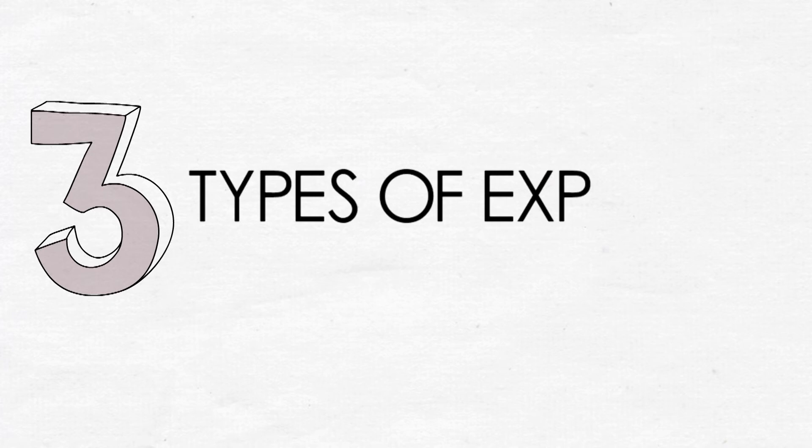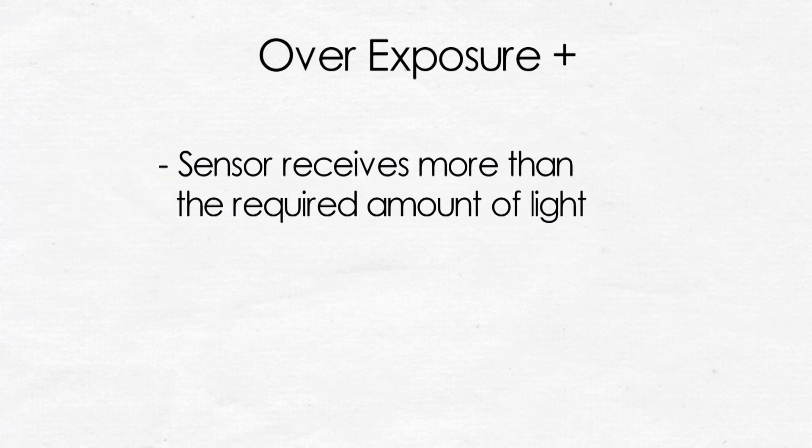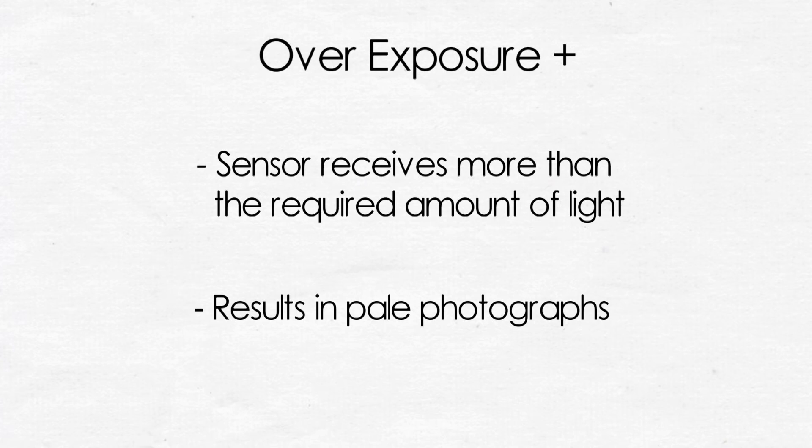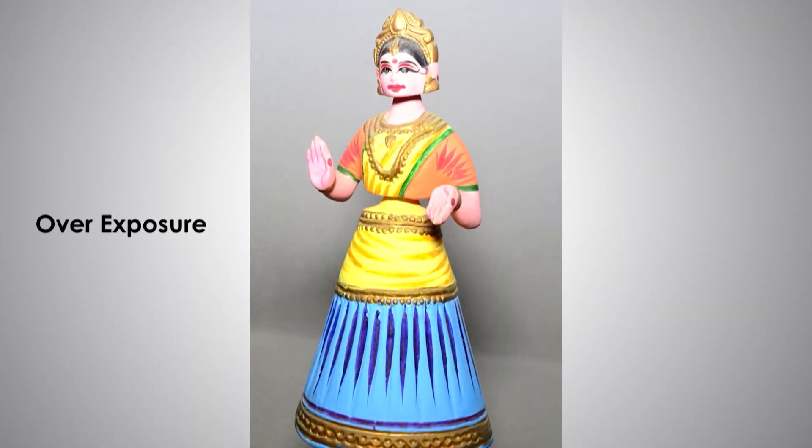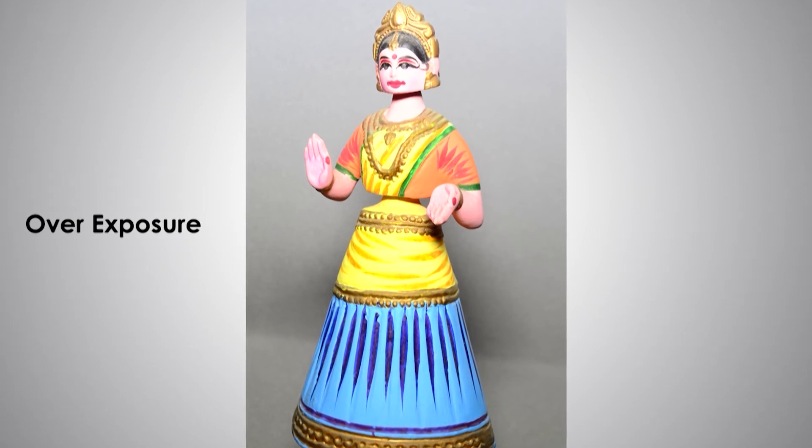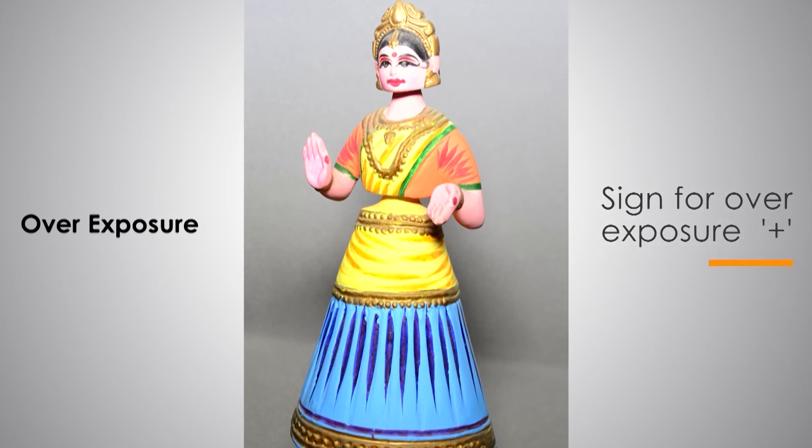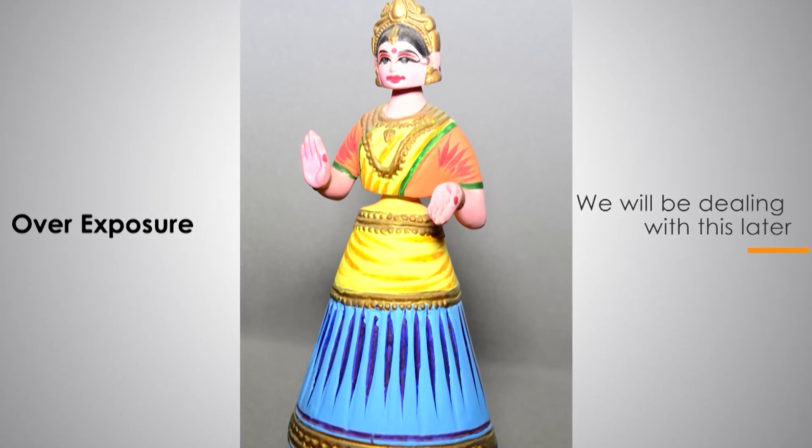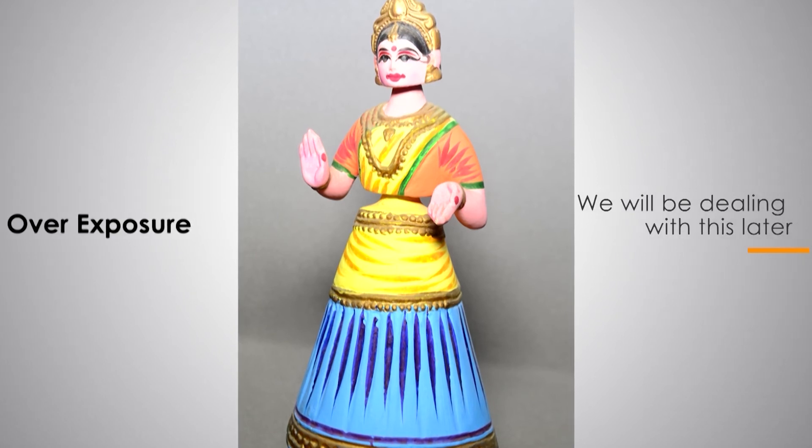Now when we are talking about exposures, there are three different types of exposures. I repeat, there are three different types of exposures. The first one is the overexposure, when the sensor receives more than the amount of light that is required. Then your photographs are going to be bleached. There is a photograph which is overexposed. When you see, it is pale, it is bleached, it cannot be used. The sign or symbol for an overexposure is a positive sign. In all camera exposure meters, when you see a plus sign, it is overexposure. So overexposure is not required, is not desirable.